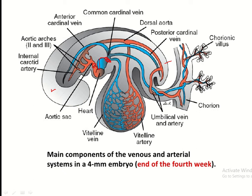The aortic sac is connected with the dorsal aorta by arteries known as the aortic arch arteries. This is the future neck region of the fetus, and here some elevated areas are present known as the pharyngeal arches. Each pharyngeal arch is externally lined by ectoderm and internally lined by endoderm, with mesenchyme in between. Each pharyngeal arch has its own nerve and blood supply — these are the aortic arch arteries which supply individual pharyngeal arches.